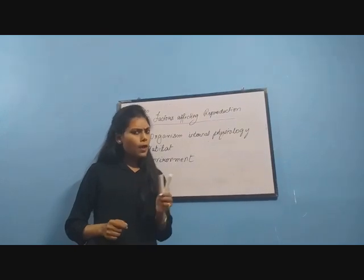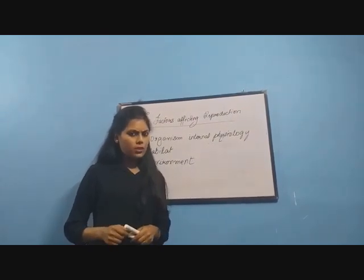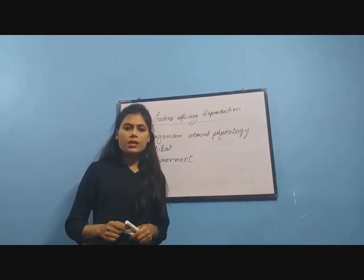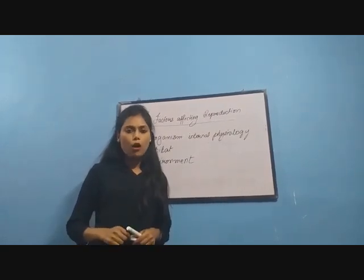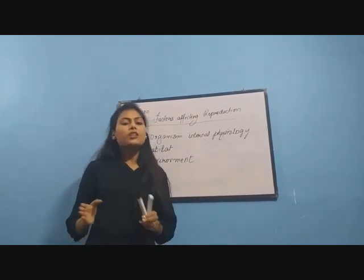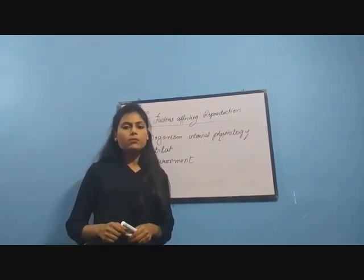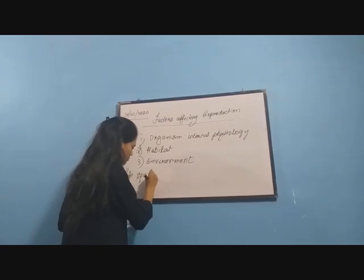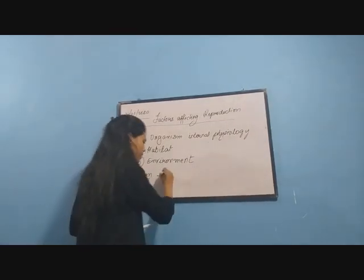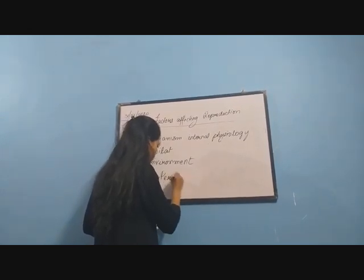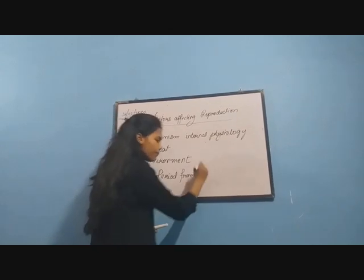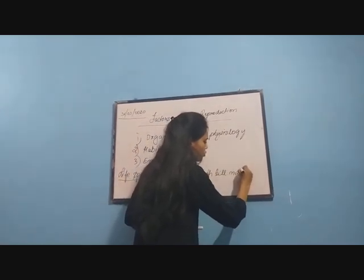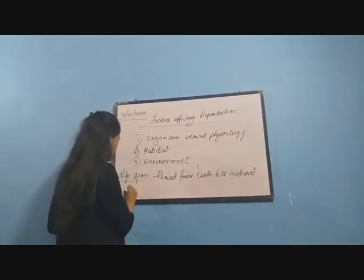If we have to define in one line, what can we say? Life span is a period from birth to natural death of the organism. If we have to define life span, it is the period from birth till natural death.